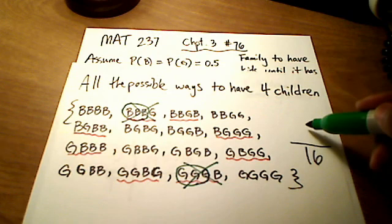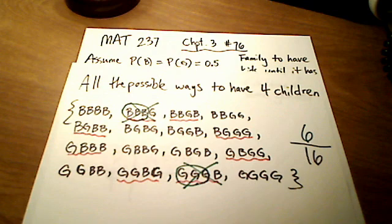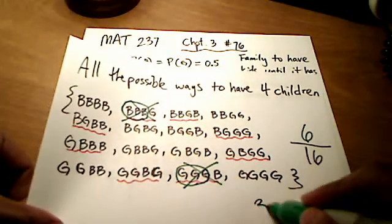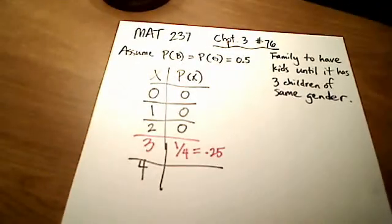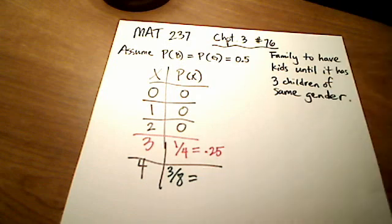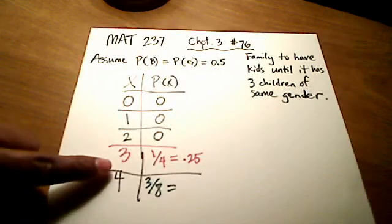After ruling those two out, I'm left with six out of sixteen. Simplifying by dividing each by two gives a probability of three over eight. On WebAssign you can write that as 3/8 or as the decimal equivalent 0.375.